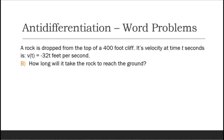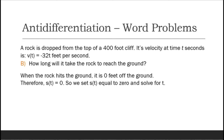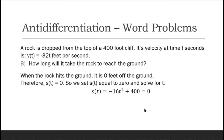For question b, how long will it take the rock to reach the ground? When the rock hits the ground, it is zero feet above the ground, so s(t) = 0. We set s(t) equal to zero and solve for t. From the equation s(t) = -16t² + 400, setting it to zero gives us -16t² + 400 = 0.